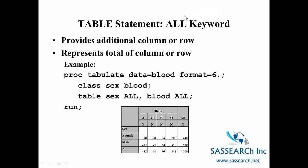Another very helpful keyword for PROC TABULATE is the ALL keyword. It provides an additional column or row depending on where you place it, and basically tells SAS to produce a totals column or a totals row. In this procedure we're using the ALL statement to get a column summarizing the gender totals and a row summarizing the blood type totals. These are just a few of the different types of tables we can produce with PROC TABULATE — basic tables with actual counts within the cells.